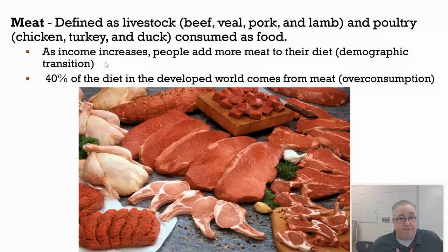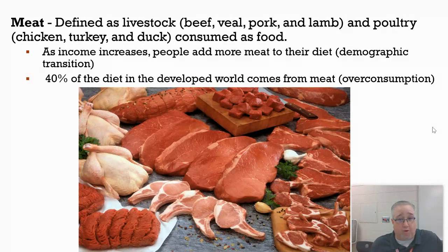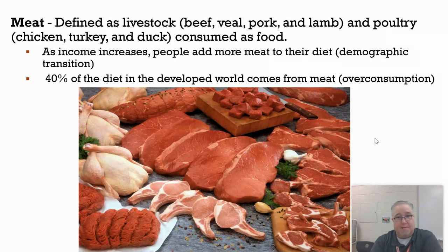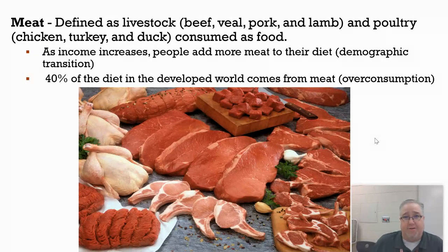The developed world consumes much more meat than the developing world. About 40% of the diet in developed countries comes from meat. We don't have to eat that much meat — it's more of a luxury item. It's relatively cheap and easily accessible. In the developing world, as little as 1% of the diet may come from meat, which is quite a drastic difference.